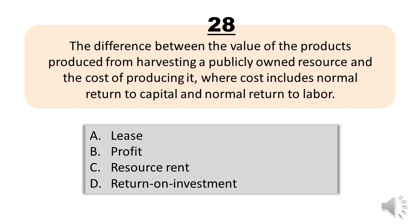Number 28. The difference between the value of the products produced from harvesting a publicly owned resource and the cost of producing it, where cost includes normal return to capital and normal return to labor. A. Lease. B. Profit. C. Resource rent. D. Return on investment. The correct answer is Letter C. Resource rent.